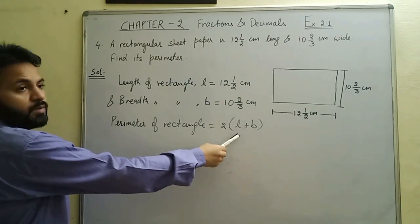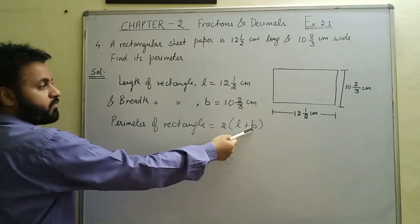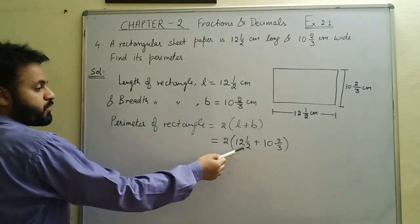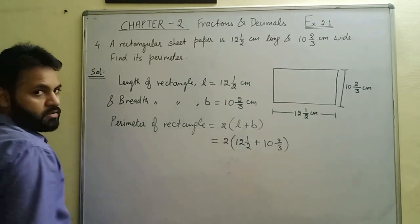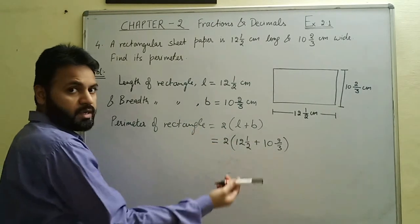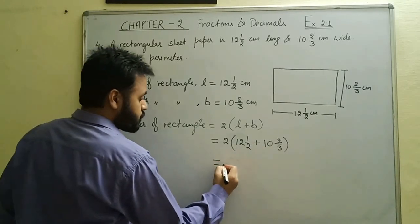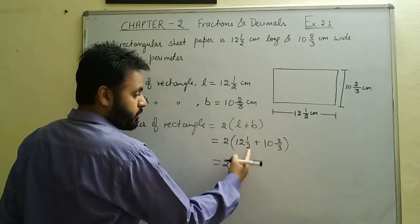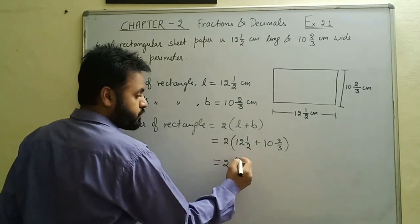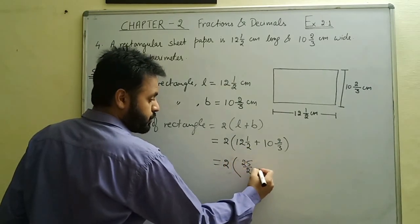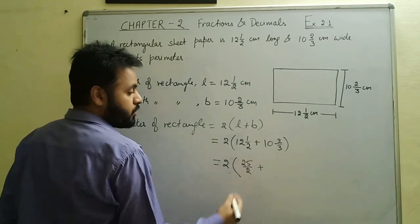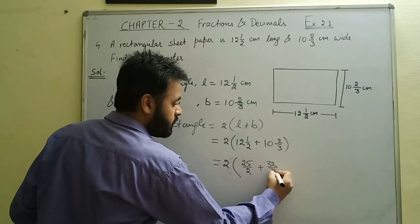We put the value of l as 12½ and b as 10⅔. To solve the bracket, we first change the mixed fractions to improper fractions. So 12½ becomes: 12 × 2 = 24, and 24 + 1 = 25, giving us 25/2. Similarly, 10 × 3 = 30, and 30 + 2 = 32, giving us 32/3.